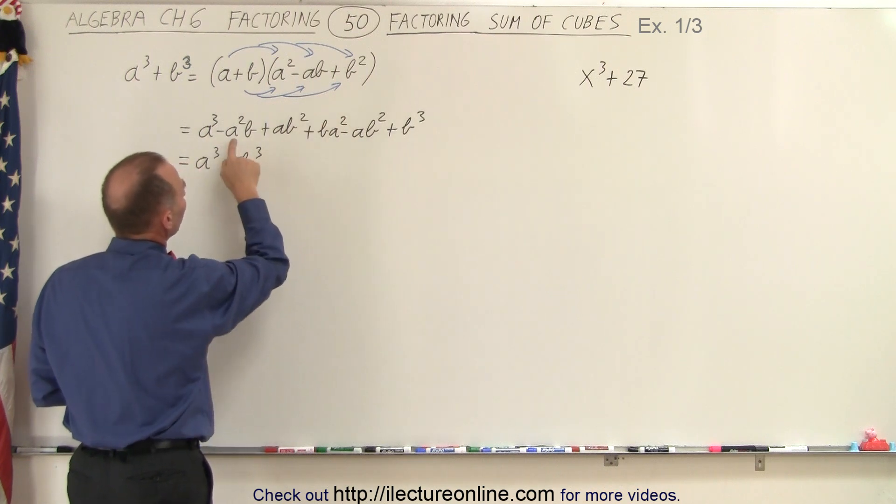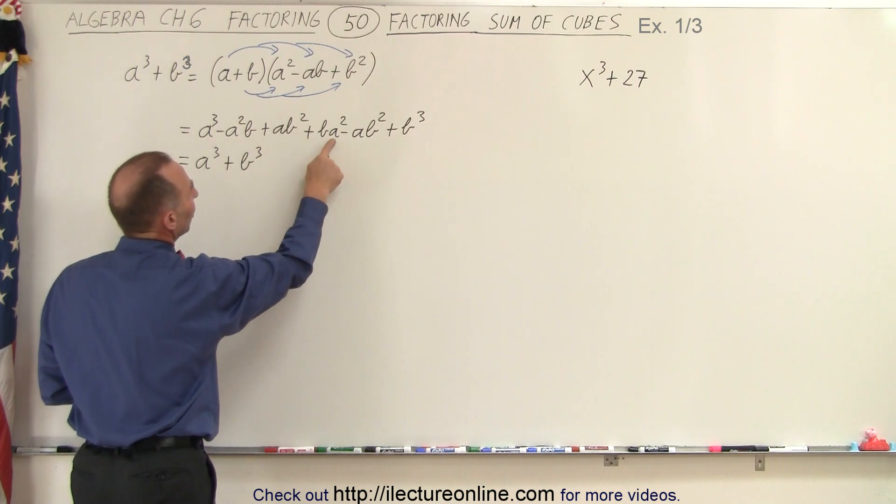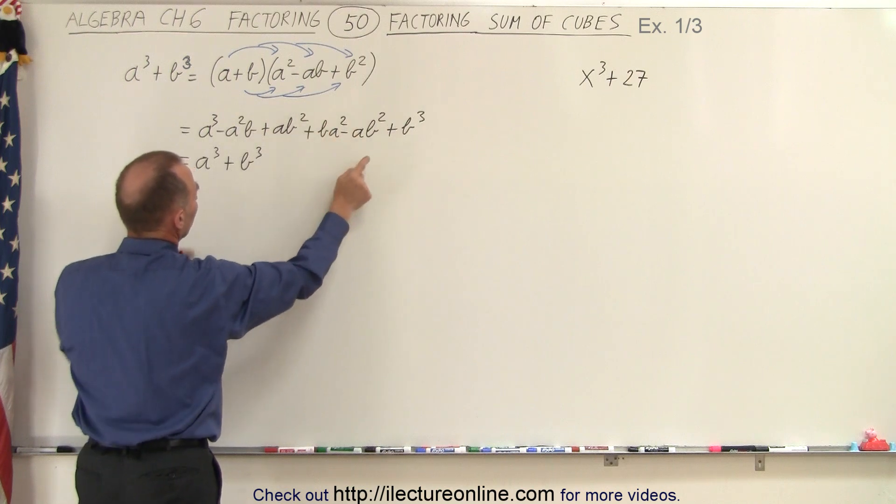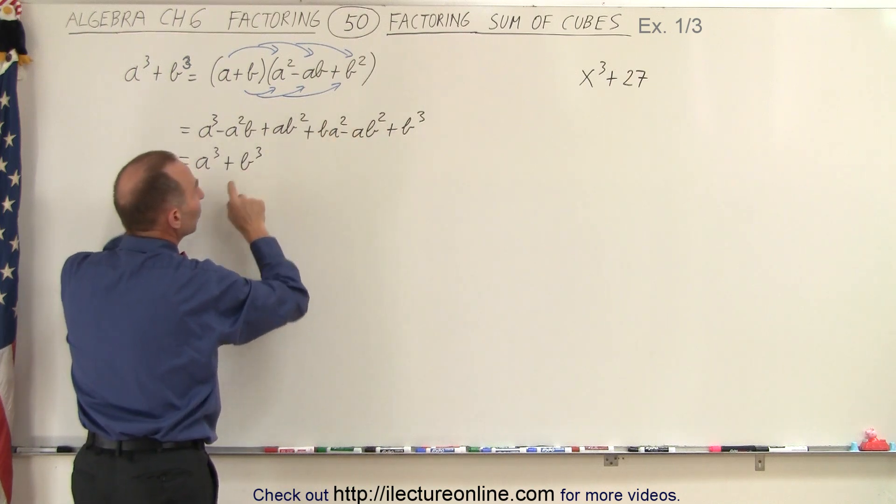When we do that, notice that minus a squared b plus a squared b plus ab squared minus ab squared, the four middle terms disappear and end up again with a cubed plus b cubed.